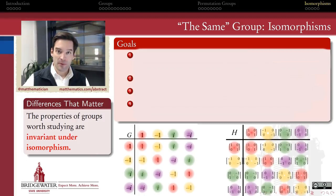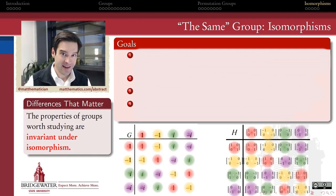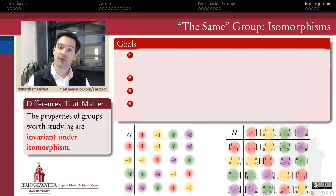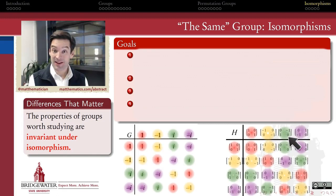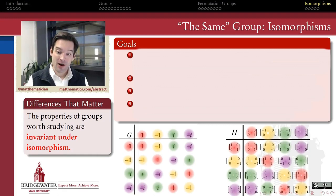In algebra, we typically say that we study groups, but only study them up to isomorphism. When we say that, that's just a fancy way of saying that the only properties of groups that we care about at the end of the day are those that are preserved by an isomorphism. In other words, we only care about the differences between groups that truly matter, and we want to be blind to the differences that do not — for example, the difference between the complex numbers in this group and the 2x2 matrices in that group. The algebraic structures are the same, and so the only properties that we care about are those that don't depend upon those superficial differences.